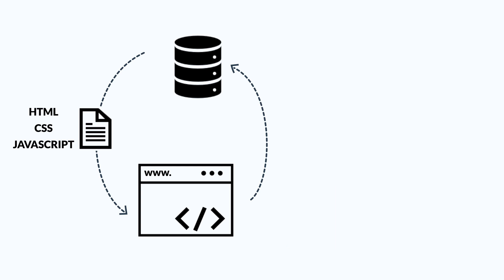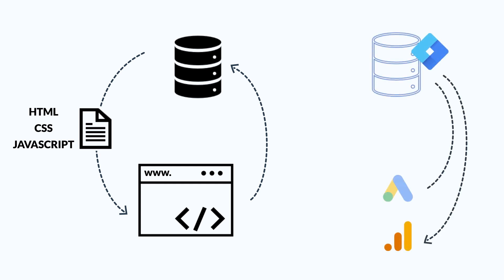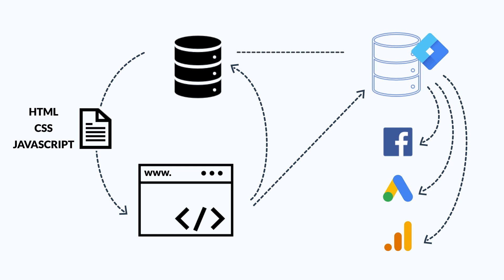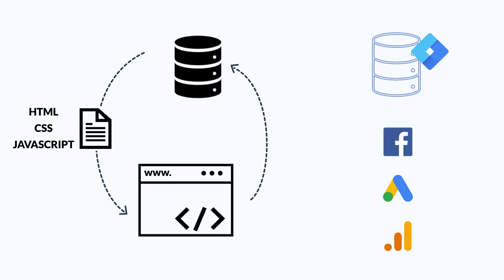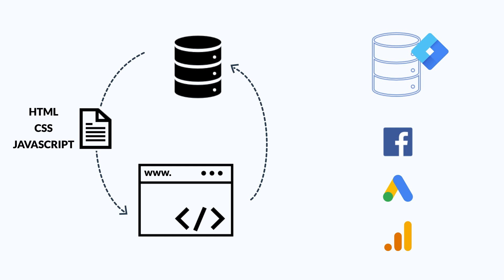With server-side tracking, we don't have that direct connection. We actually build our own tracking server, which then connects directly to our different tools. How does the tracking data get to our server? We either send it still from the client-side, or we could also send it directly from the web server or your application to your tracking server. From there, it then gets distributed to your tools. The big advantage is that we potentially only have to send the data once to our tracking server, and from there it gets distributed to all our different tools.